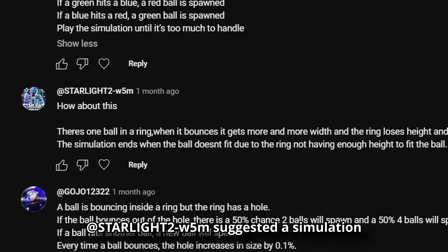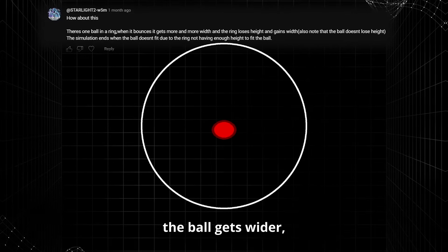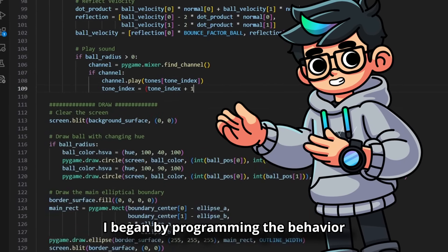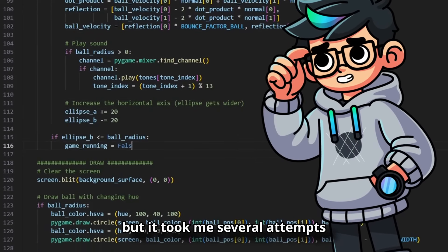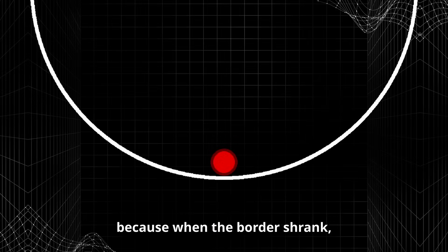Starlight suggested a simulation of a ball with a ring border, where with each bounce, the ball gets wider while the border loses height and gains width. I began by programming the behavior of the boundary, but it took me several attempts to get it right.